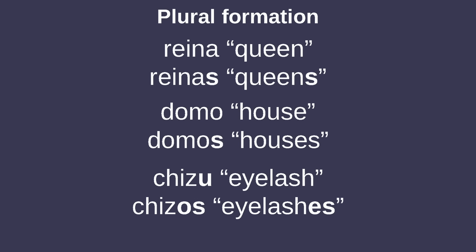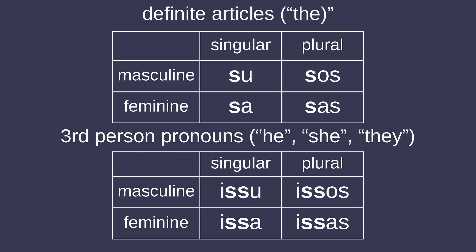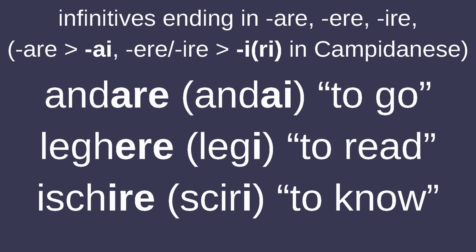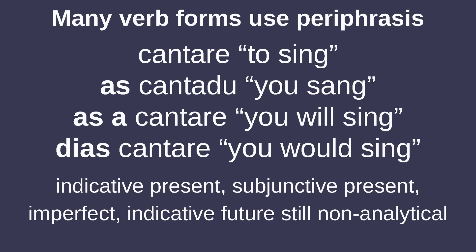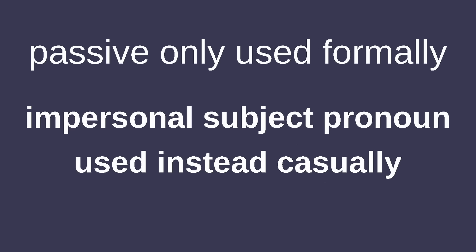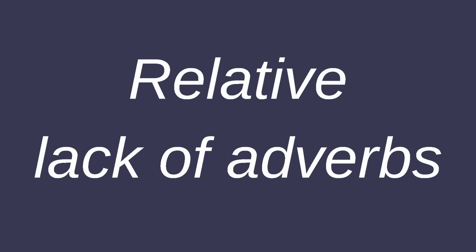Sardinian uses J to represent the palatal approximant /j/, X for /ʒ/ in varieties that have it, and TZ for /ts/. Plurals in Sardinian end in S, sometimes changing the final vowel. Definite articles and third-person pronouns have 'sa' instead of 'la' like most other Romance languages. Infinitives end with -ARE, -ERE, and -IRE, but are reduced in Campidanese. Many verbal inflections are formed with periphrasis — spreading across two or more verbs instead of having their own designated fusional suffix. Mainly the indicative present, subjunctive present, imperfect, and indicative future retain their own non-analytical forms. The passive voice is limited to formal situations, with an impersonal subject pronoun typically being used instead. And there's a relative lack of adverbs, with a few usually formed by reduplication.